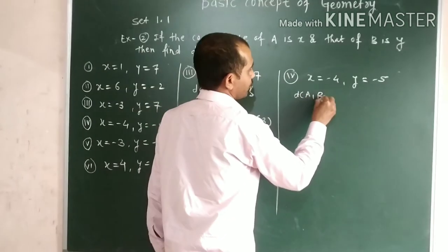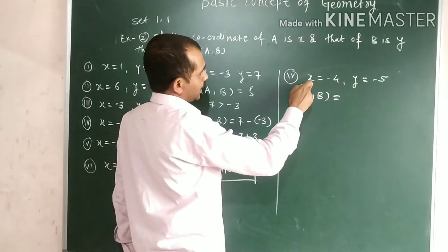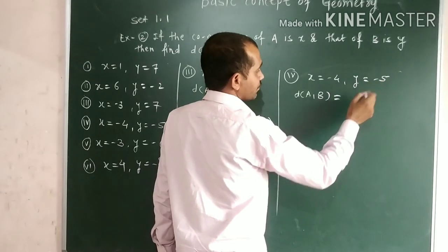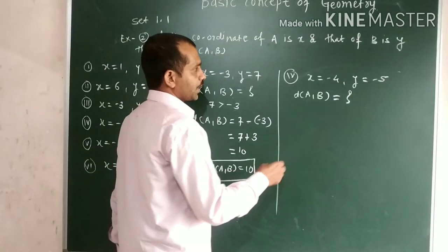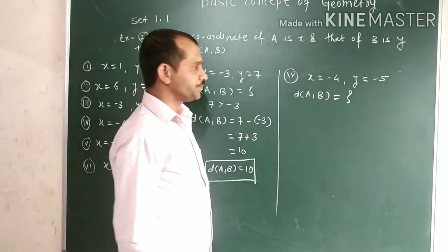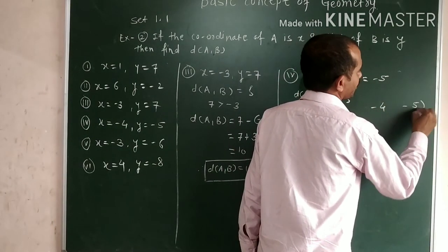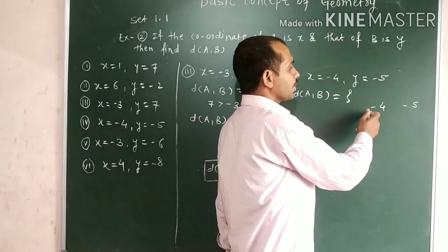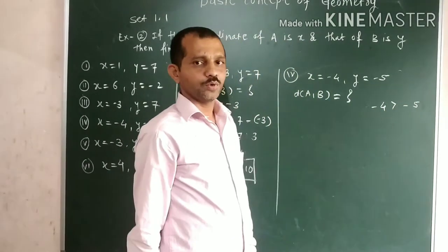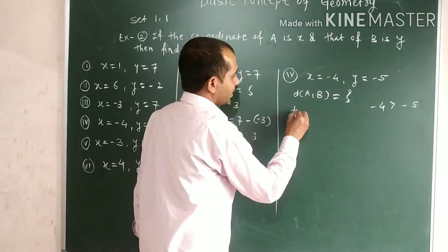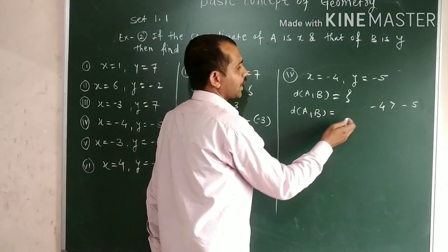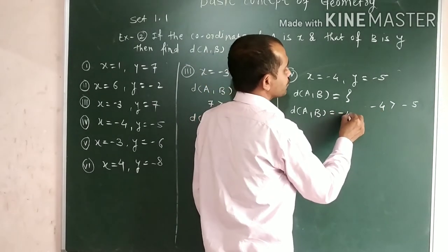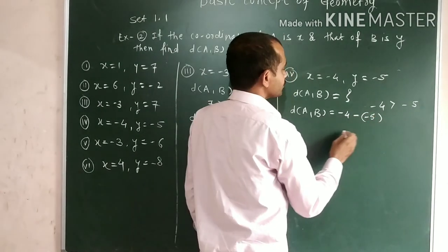d of AB: A coordinate is x and B coordinate is y. A coordinate is minus 4 and B coordinate is minus 5. Among minus 4 and minus 5, which is the greater number? Minus 4 is greater. The distance between A and B: minus 4 minus minus 5 equals minus 4 plus 5 equal to 1.